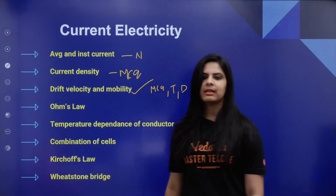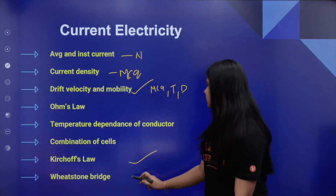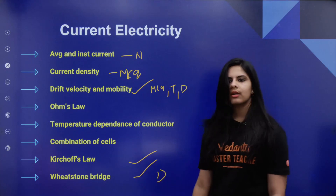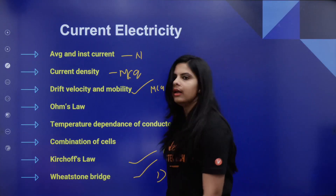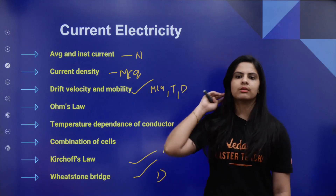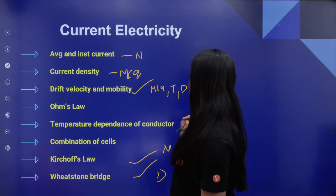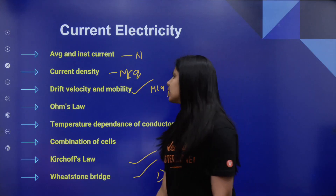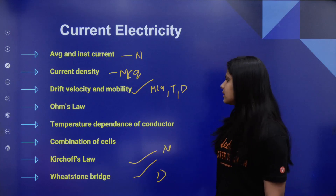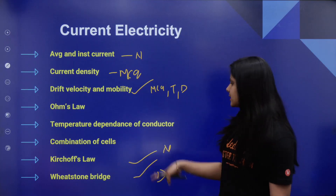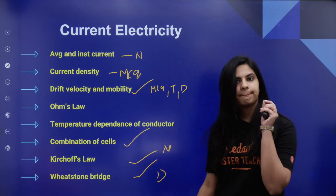Ohm's Law, temperature dependence, combination of cells, Kirchhoff's Law, and Wheatstone Bridge — Wheatstone Bridge is definitely important. The derivation of Kirchhoff's Law is numericals. Combination of cells is most probably important for numericals. Drift velocity, combination of cells, Kirchhoff's Law, and Wheatstone Bridge — study these for the exam.